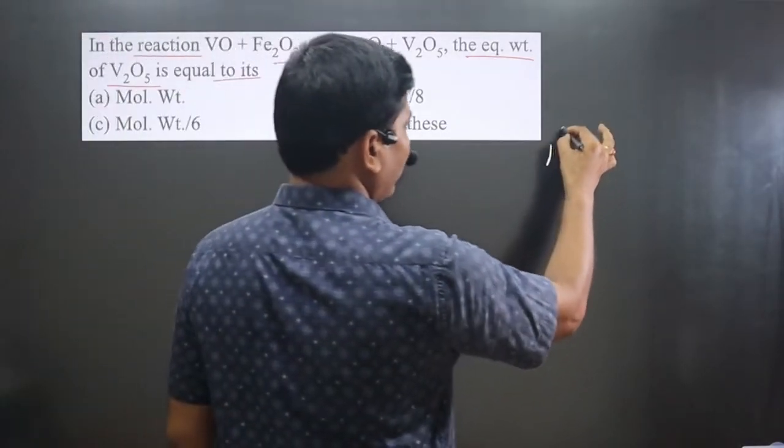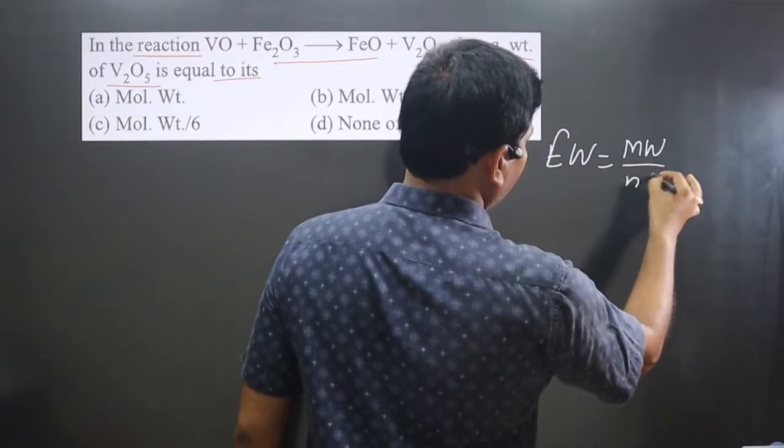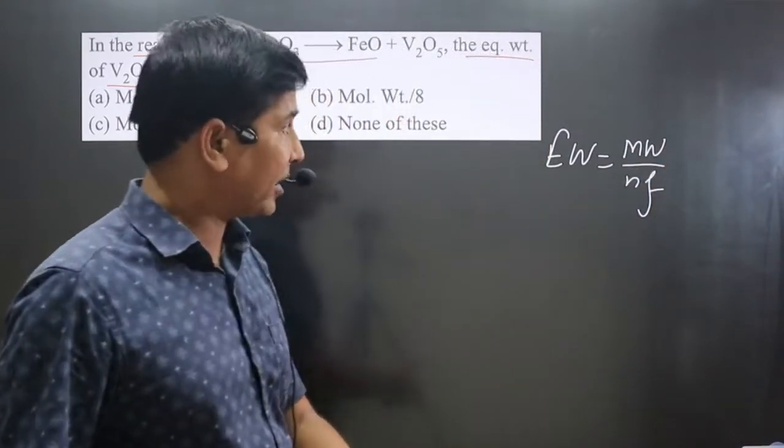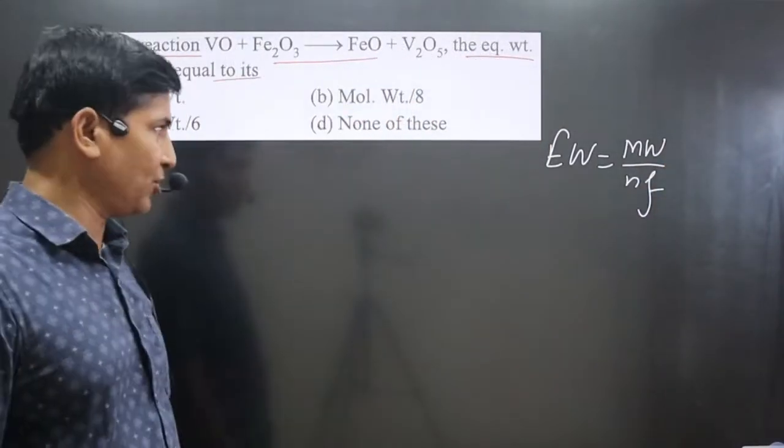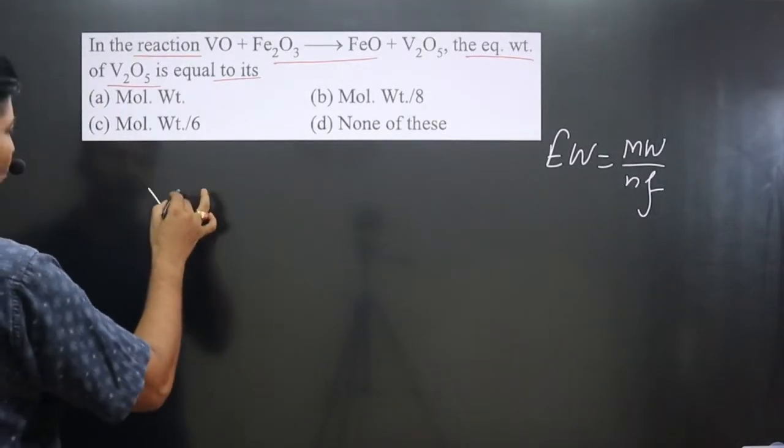Equivalent weight is equal to molecular weight divided by n factor. If we calculate n factor value for V2O5, we can answer this question. So let's calculate. We have the reaction, this is VO...